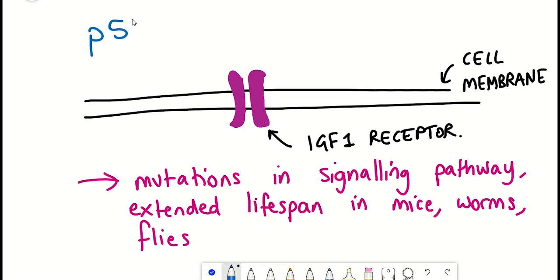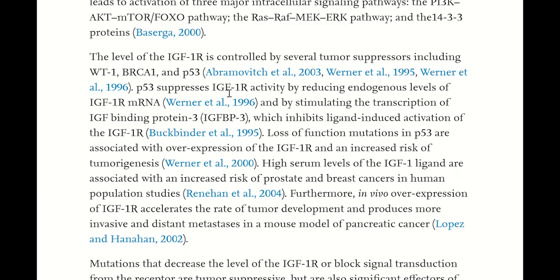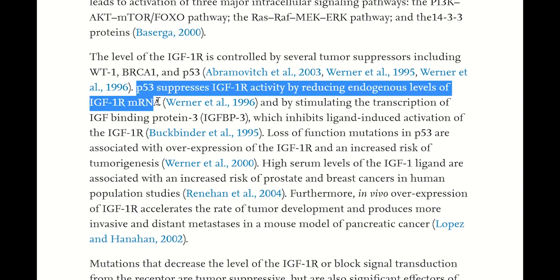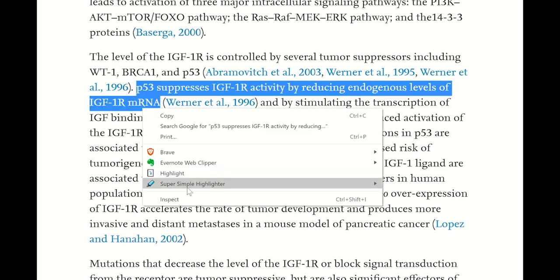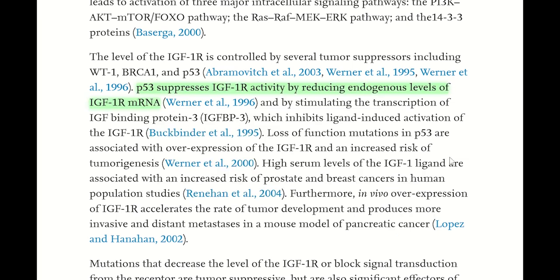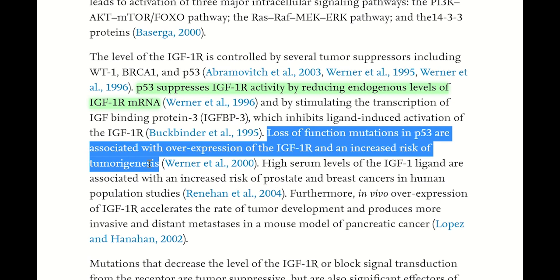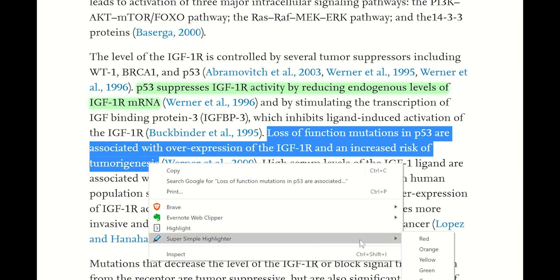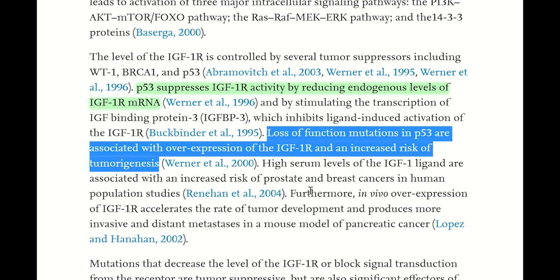Interestingly, P53 apparently also suppresses IGF-1 receptor activity by reducing the endogenous levels of the mRNA that encodes the protein, and it also stimulates the production of a protein that can inhibit the action of the receptor as well. In line with this, mutations in P53 that result in its loss of function are associated with higher expression levels of IGF-1 receptor and an increased risk of tumorigenesis.